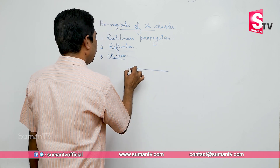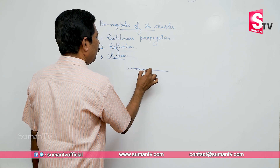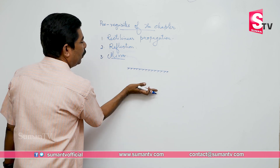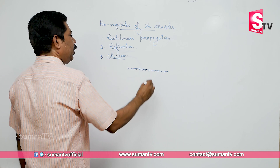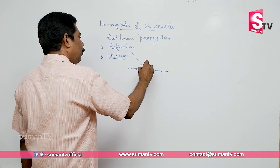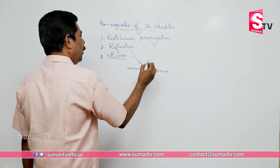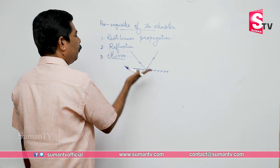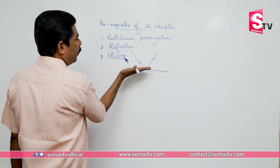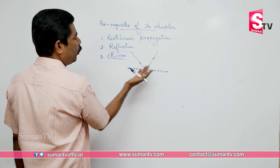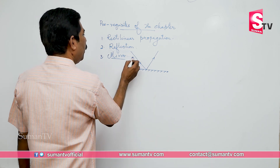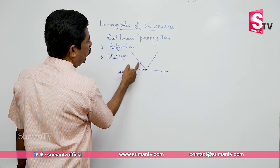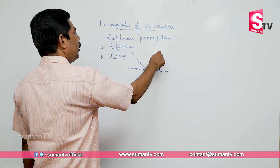A plane mirror can be represented by this symbol, and this shows that on one side no reflection takes place. But if a light ray falls on that surface, it is reflected. Only one of the surfaces is the reflecting surface and the other is not. The ray incident on that surface is known as the incident ray, and the reflected ray is the reflected ray.